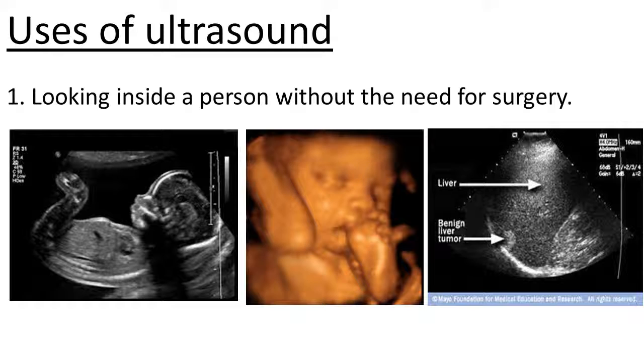First one: looking inside a person without the need for surgery. So no need to cut into people to look inside them, you can just use ultrasound. You bounce a sound off of the internal organs, or in this case a little baby there. That first picture, the one on the left, that's a 2D ultrasound picture of a baby. You can just about see its backbone, its vertebra, the white bits of the hard bone. Then in the middle we've got this really impressive 3D ultrasound picture of a baby, and on the right is a picture of a tumor.